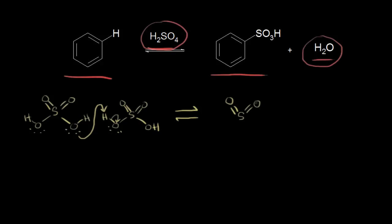We have sulfur double bonded to an oxygen, with an OH group on the left. On the right, we've now protonated this oxygen, so it has a plus one formal charge. Following those electrons, these electrons form this bond and give us a plus one formal charge on that oxygen. For the other sulfuric acid molecule—the one that functioned as an acid—it's going to lose a proton, leaving us with the conjugate base, which is HSO₄⁻.